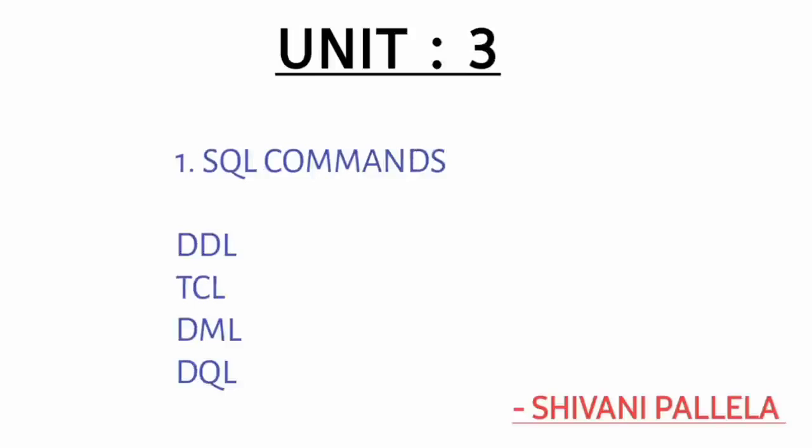Unit number three also has one question: SQL commands. There are four types — DDL, DQL, DML, and TCL. If they specifically ask DDL, attempt DDL only; if they ask DQL, attempt DQL only. If you are familiar with all SQL commands, it will be easy to attempt both long and short answer questions. Total 10 marks weightage comes from unit two and unit three.